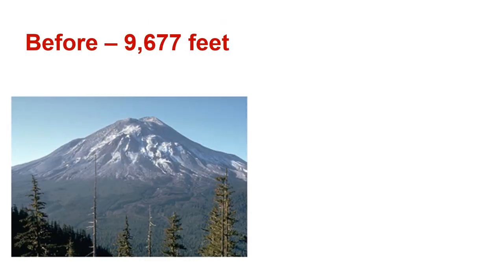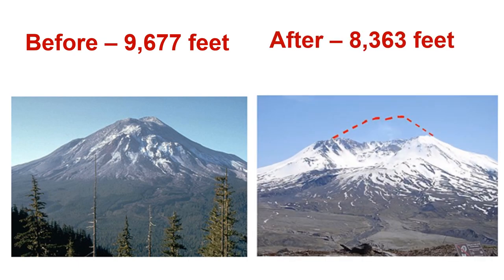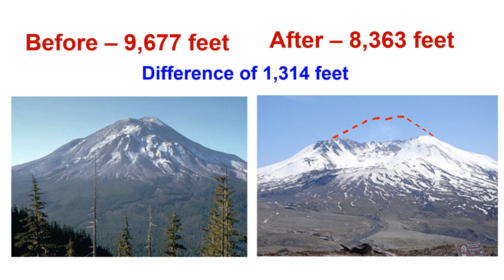Here's a picture of Mount St. Helens before the eruption at 9,677 feet. After the eruption, it was at 8,363 feet — the red dotted line showing what the mountain used to look like, with a difference of 1,314 feet.